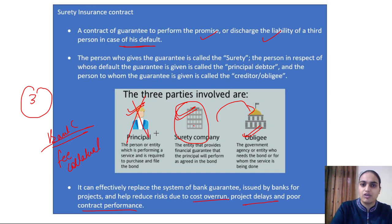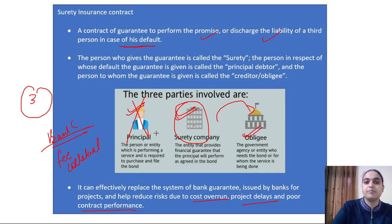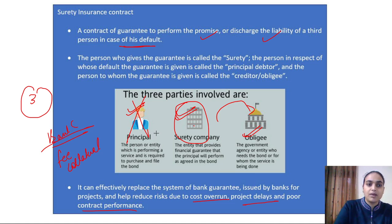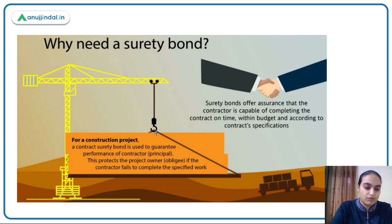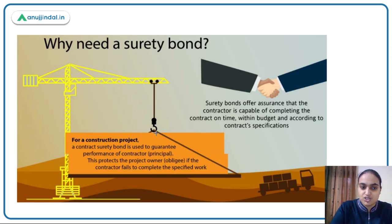There are different kinds of surety contracts — some relate to actually executing the project in case of default, others relate to compensating financially. These have been discussed in detail under the guidelines. The key reason we need a surety bond is that risks for the government or the project owner get transferred because they receive the necessary assurance.